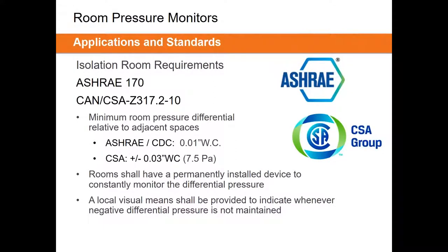ASHRAE 170 gives us very clear-cut requirements for isolation rooms. First, it gives us minimum room pressure differentials — we need 0.01 inches of water column in each of these spaces. It specifies whether positive or negative depending on room type. Very clearly, the standard states rooms shall have a permanently installed device to constantly monitor the differential pressure. Isolation rooms require room pressure monitors — you can't have one without the other.